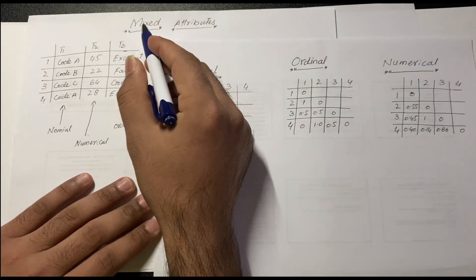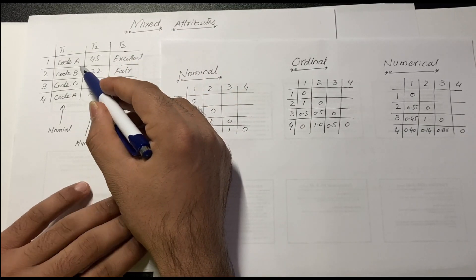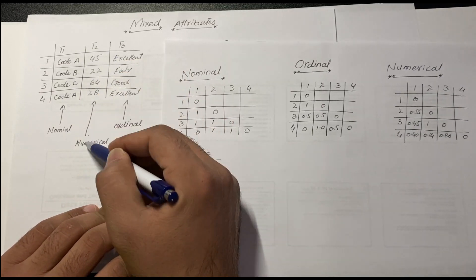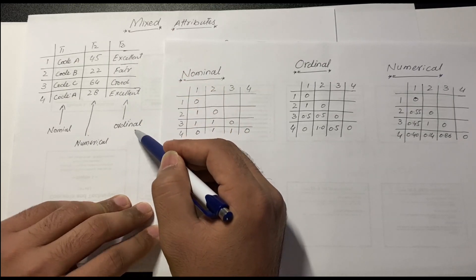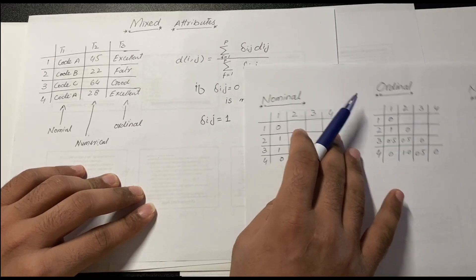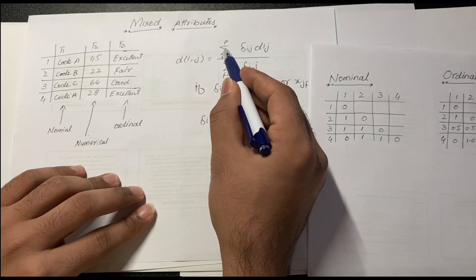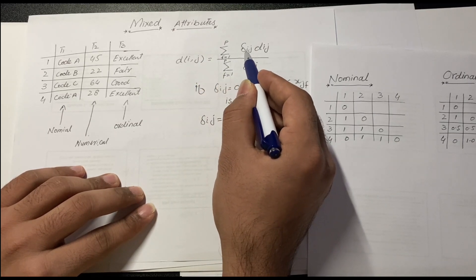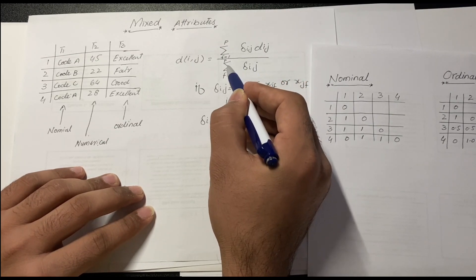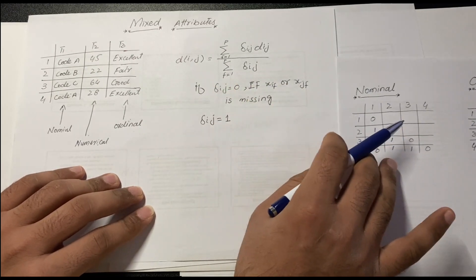In this video we will find proximity measures for mixed attribute. In this example we have mixed attribute data: t1 is nominal, t2 is numerical, t3 is ordinal. For mixed attribute we have the formula: d(ij) equals summation of delta_ij multiplied by d_ij, divided by summation of delta_ij.